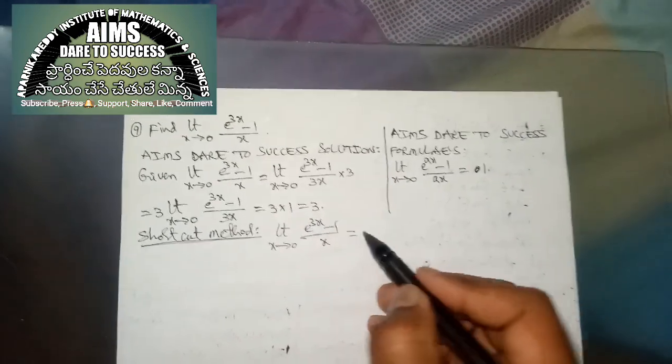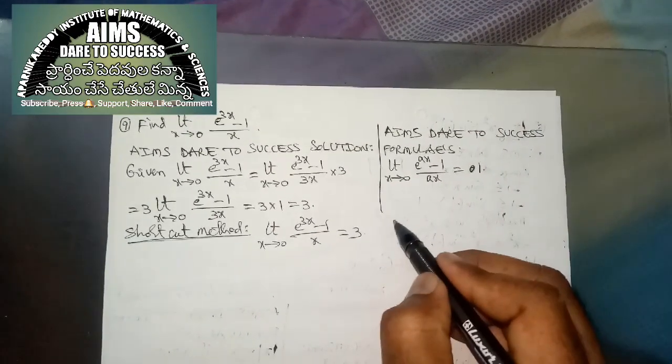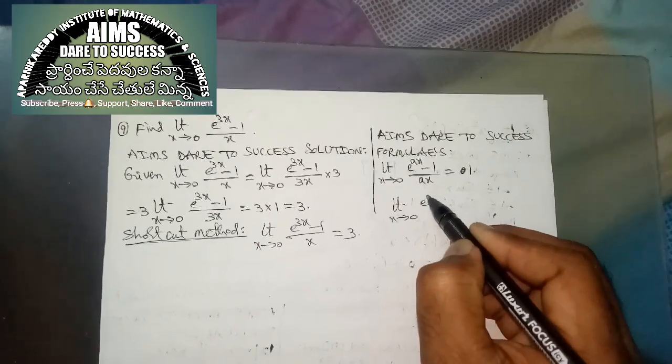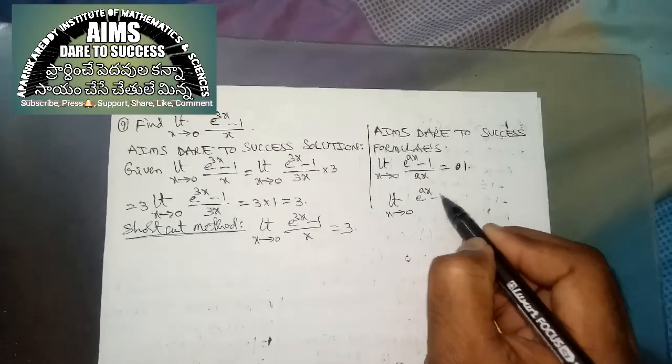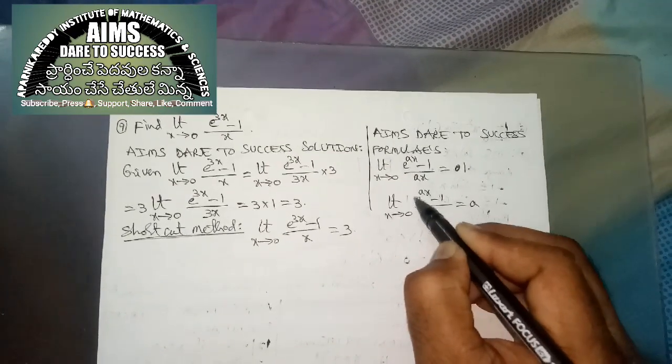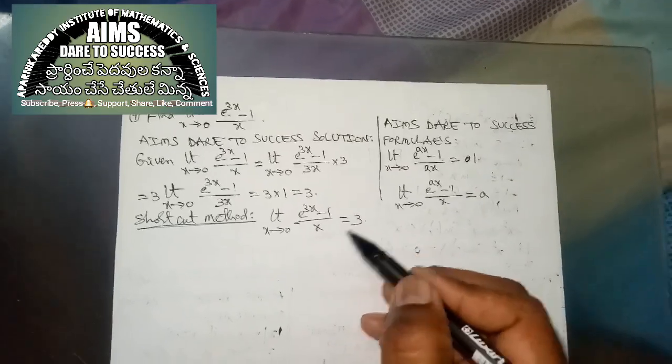Why? Because the formula is limit x tends to 0, e power ax minus 1 by x is equal to a. So x coefficient a is here, x coefficient is 3, that is the answer.